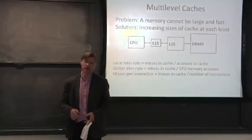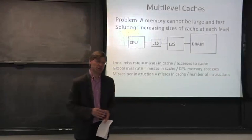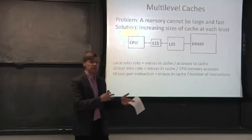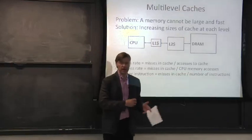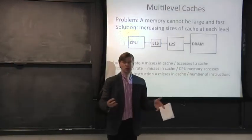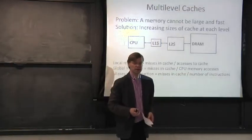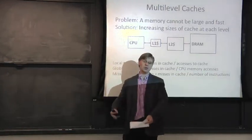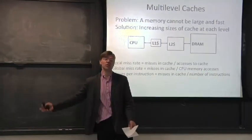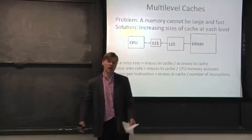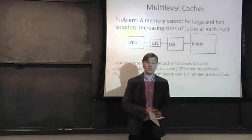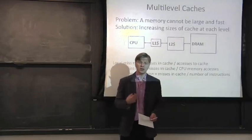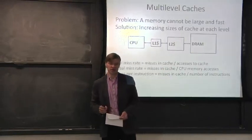The next cache optimization we are going to look at is adding multi-level caches. You probably see this in any modern day processor — there are level one caches, level two caches, maybe level three or even level four caches. We're going to talk about why this might be a good idea and what the effect is on the different parameters we've been looking at throughout this lecture.